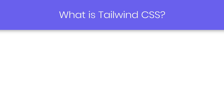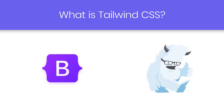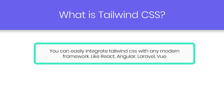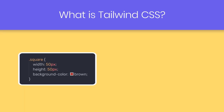It is different from other CSS frameworks such as Bootstrap and Foundation because of the new way of building user interfaces using a utility-first approach rather than using an object-oriented one. You can easily integrate Tailwind with many popular modern frameworks like React, Angular, Laravel, Vue, and so on. The very first question that comes to mind is: what is the utility-first approach?